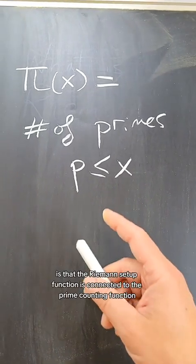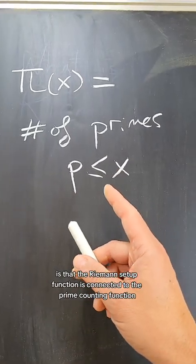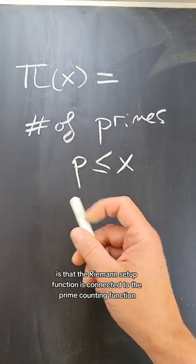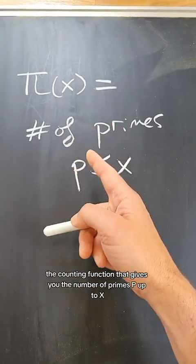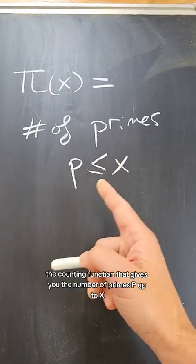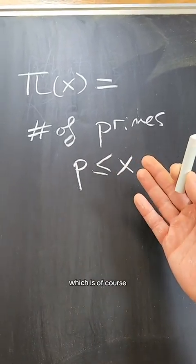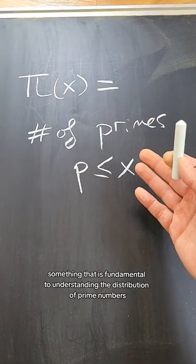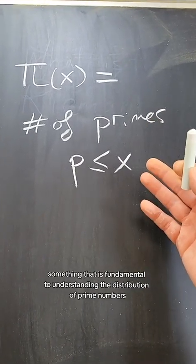Riemann cared is that the Riemann zeta function is connected to the prime counting function, the prime counting function that gives you the number of primes p up to x, which is, of course, something that is fundamental to understanding the distribution of prime numbers.